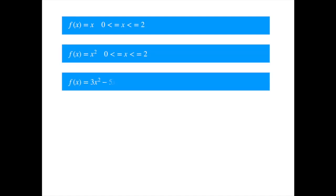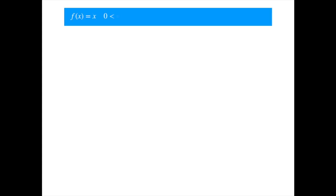We will calculate the total variation and quadratic variation of these functions over the interval from 0 to 2. We will first give a mathematical derivation and then illustrate the limiting behavior visually. Let's start with the simplest of these, f(x) = x, the familiar 45-degree line, but with domain restricted from 0 to 2.